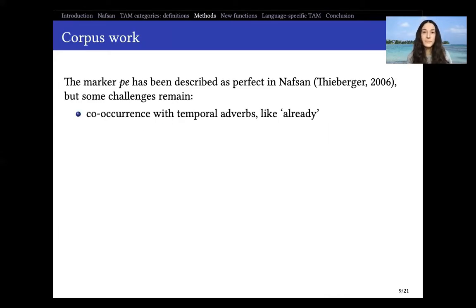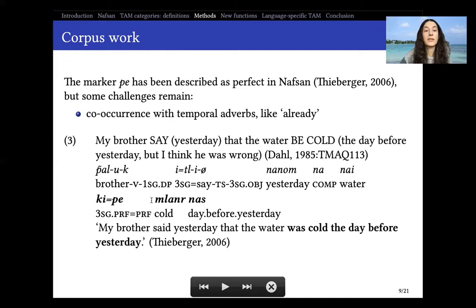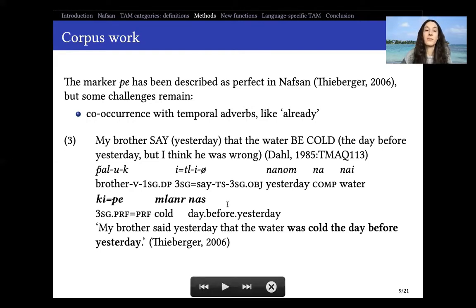The marker P in Nafsan has been described as perfect. When Nick describes P as perfect, he gives several functions such as resultative, but some challenges remain. For instance, we get this marker co-occurring with temporal adverbs — just as we would expect from 'already' and not from perfect. For example, from the Dahl questionnaire item 85: 'my brother said yesterday that the water was cold the day before yesterday' — here we have the third person proclitic perfect and then P as perfect with 'cold, day before yesterday.' This is something that would rather be expected from 'already' than from a perfect, so this is an uncertainty we need to resolve.